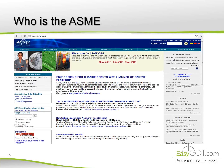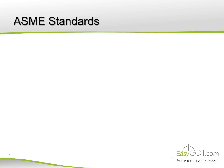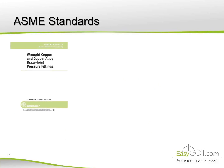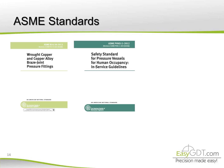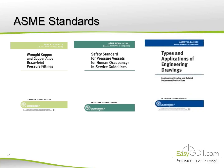What is the ASME? It is the American Society of Mechanical Engineers, founded in 1880. It is responsible for issuing and updating some of the most used standards worldwide. Here are three examples of ASME standards: braze joints pressure fittings, pressure vessel safety standards, and types and applications of engineering drawings.